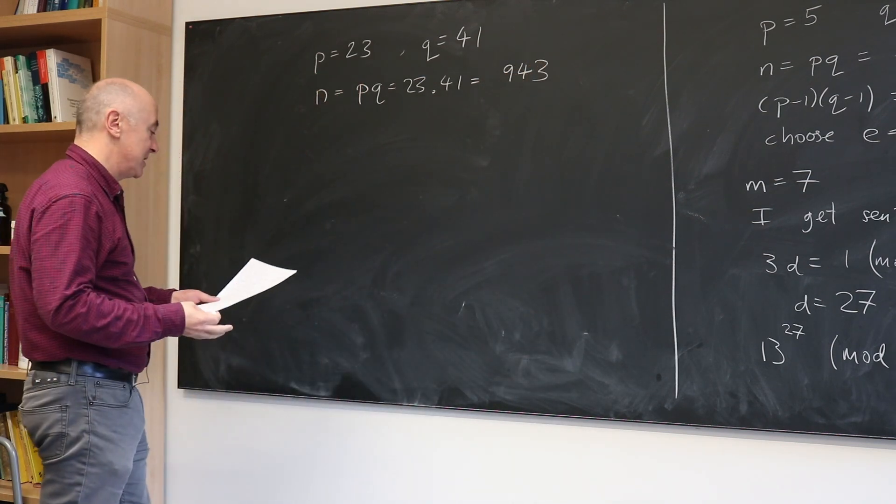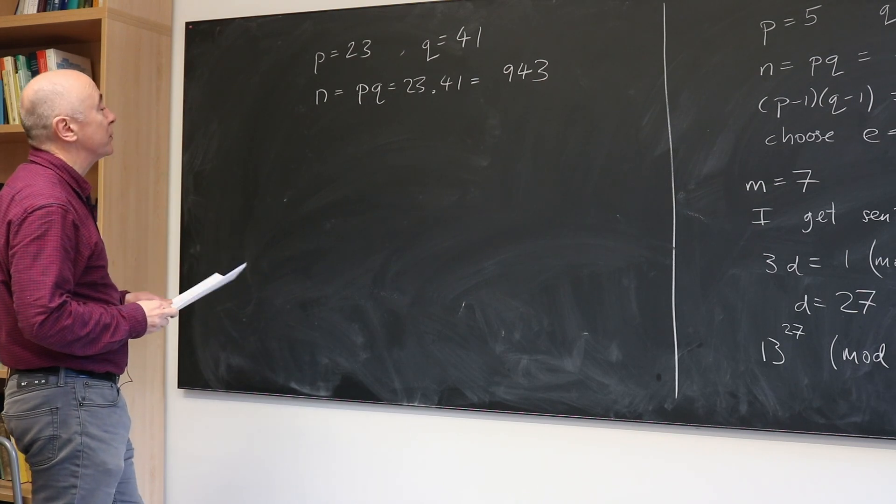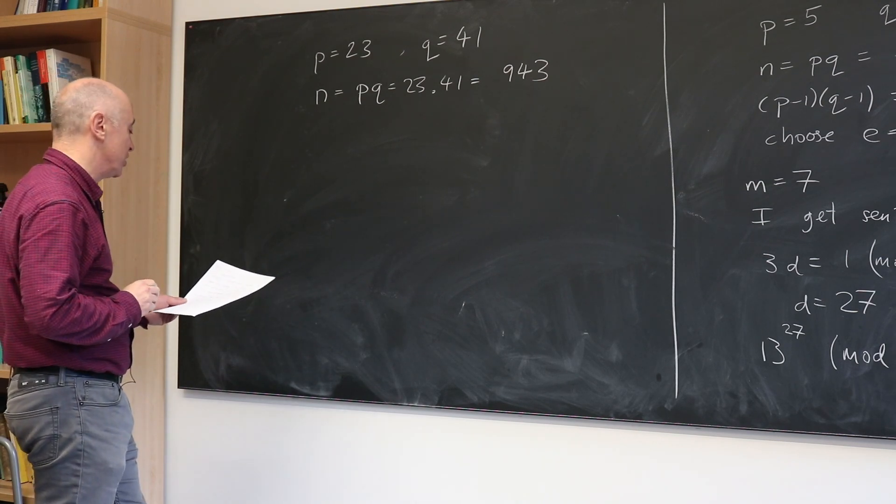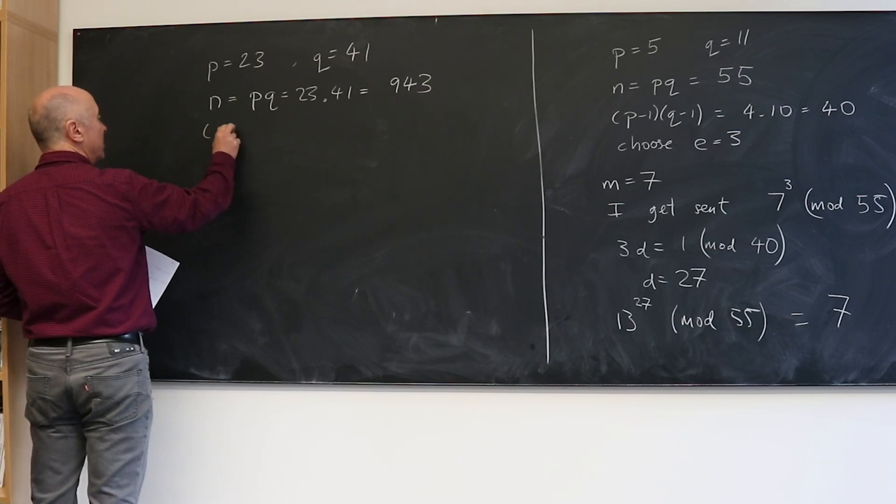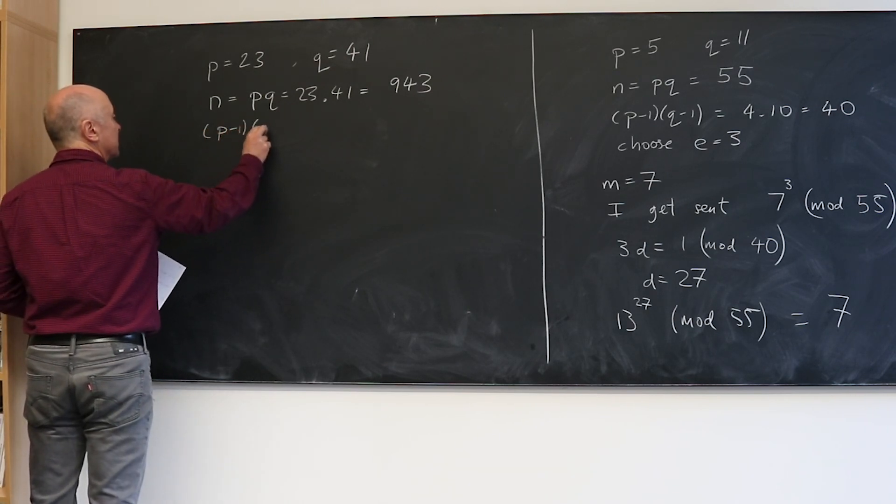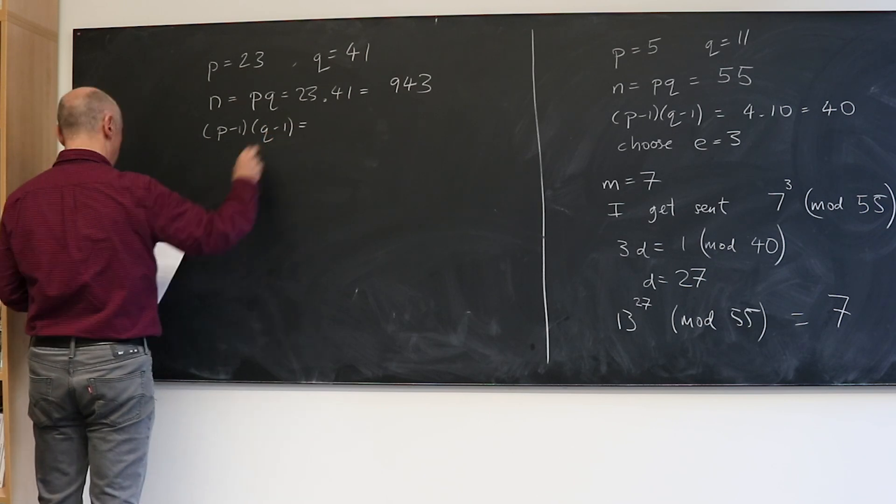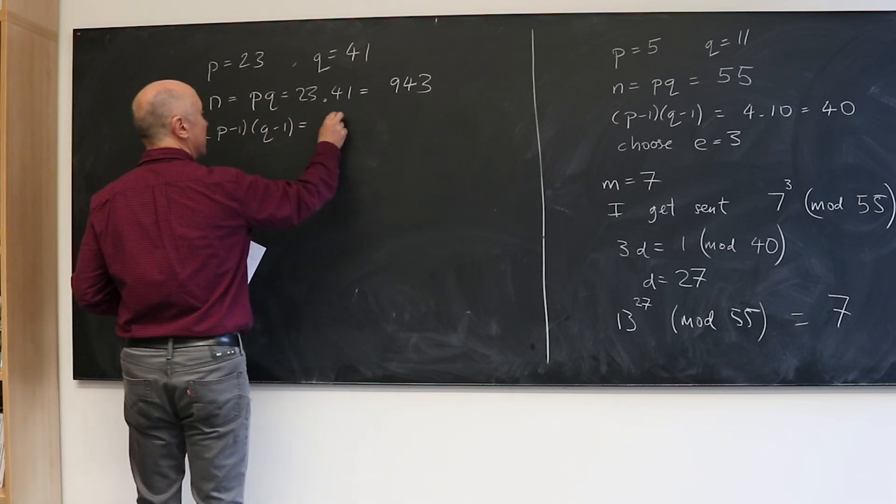The number I advertise to the world is P times Q which is 23 times 41 which is 943. So I tell the world, use 943 if you want to send me a message. The other thing I tell the world is a number E which I want to be coprime to P minus 1 times Q minus 1, and P minus 1 times Q minus 1 is 880.